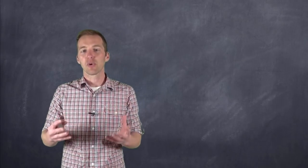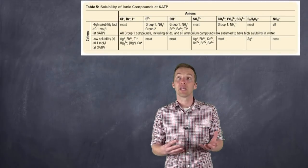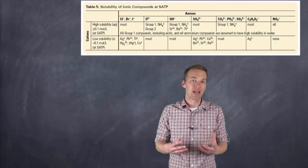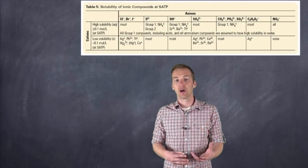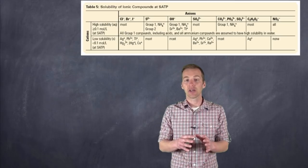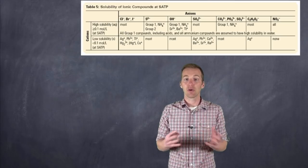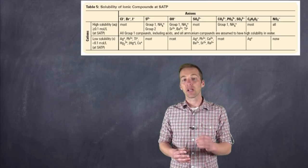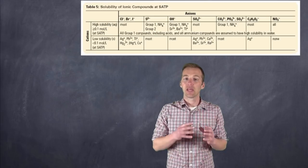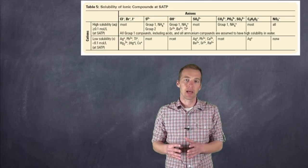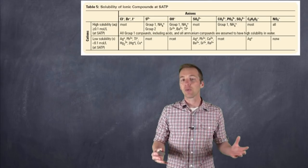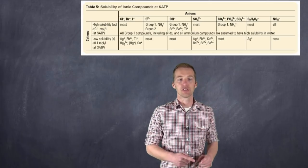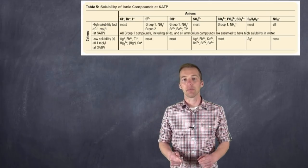It's this solubility chart that helps us figure out to what magnitude or degree something will dissolve. It's important to understand that even though compounds like calcium bicarbonate aren't readily soluble, they will produce ions to some extent. Let's take a quick review of how to use this solubility table.